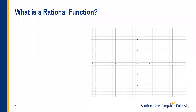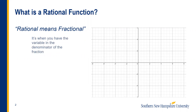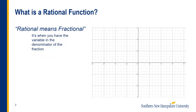So what is a rational function? Rational means fractional. Think of it as an equation in which the variable is in the denominator of a fraction. Here's an example — I wrote f of x because that's function notation. If you've seen it written as just y equals 1 over x minus 2, that means essentially the same thing.